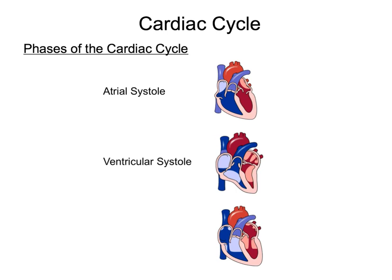And finally, the last phase of the cardiac cycle is atrial and ventricular diastole. During atrial and ventricular diastole, both chambers — atria and ventricles — relax, allowing blood to passively fill each chamber.